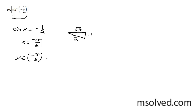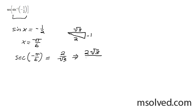So the cosine is root 3 over 2, but since this is the reciprocal, it's going to be 2 over root 3. And if you're not allowed radicals on the bottom, just multiply the top and bottom by root 3. So it's going to simply become 2 root 3 divided by 3.